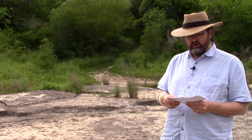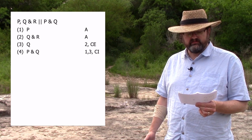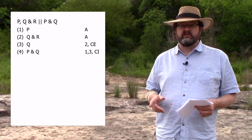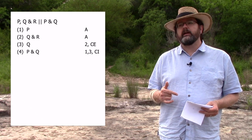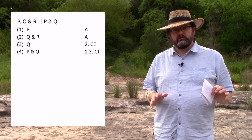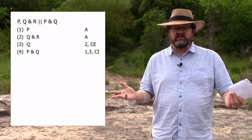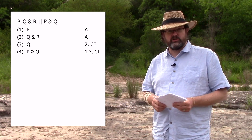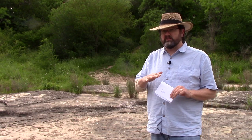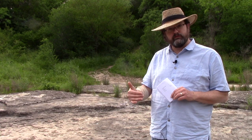One last problem for conjunctions. We have P for one premise and Q and R for another, except this time we want to infer P and Q. We'll use pretty much the same steps as before. The only difference is that we're going to infer Q from the conjunction Q and R. With conjunction elimination, you can infer either conjunct — not just one to the other. Then we simply conjoin P and Q together using conjunction introduction.